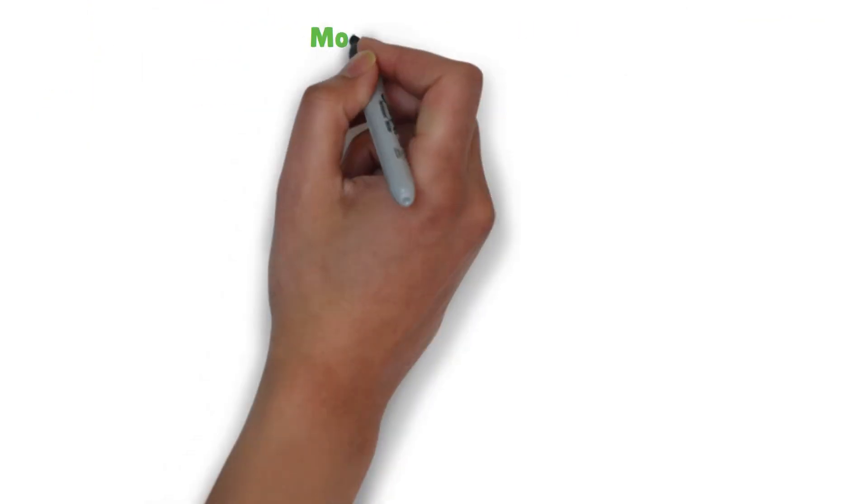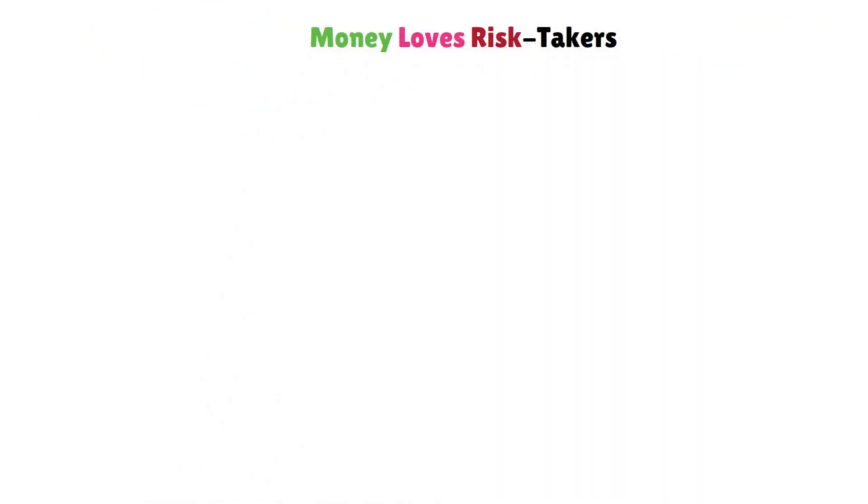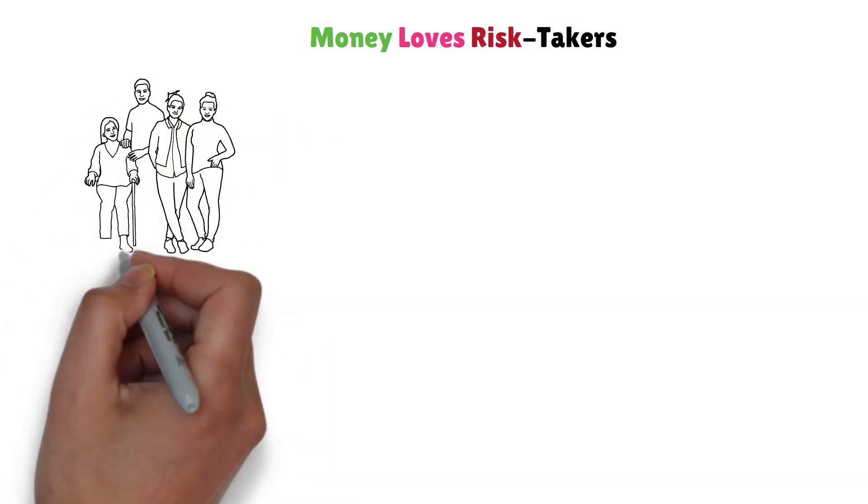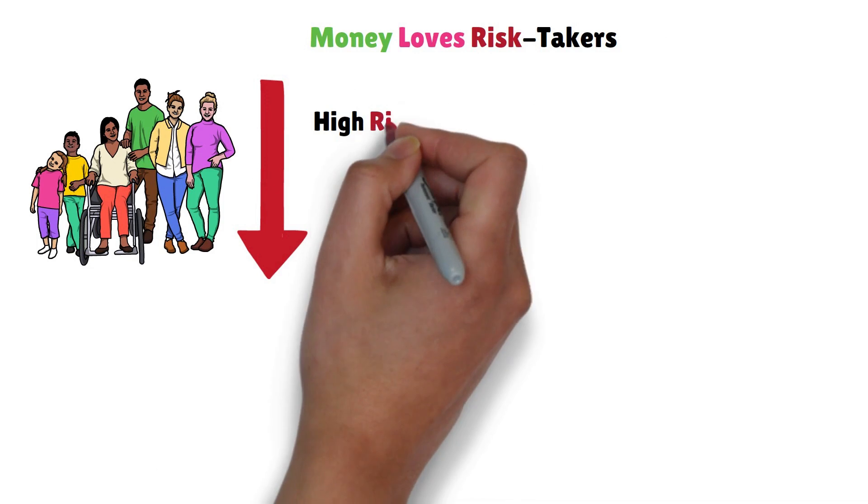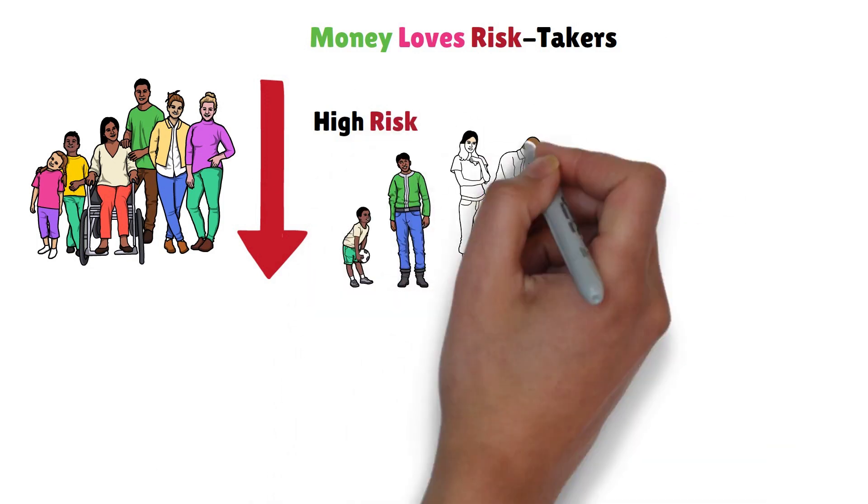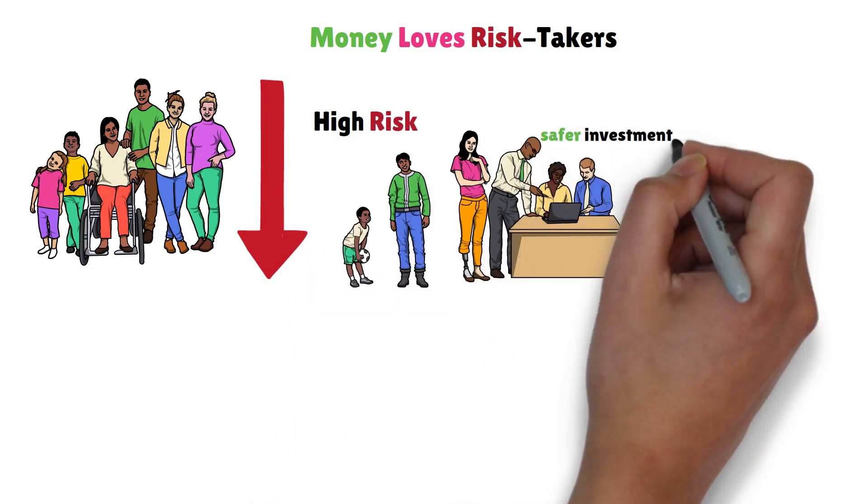Rule 3: Money loves risk takers. As you age, your tolerance for risk tends to decrease. Younger individuals are more likely to invest in high-risk options, while older individuals may opt for safer investments.